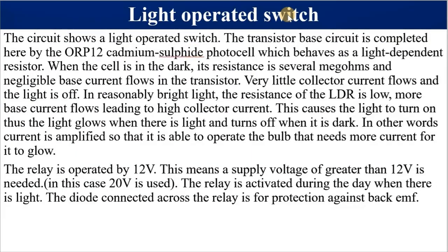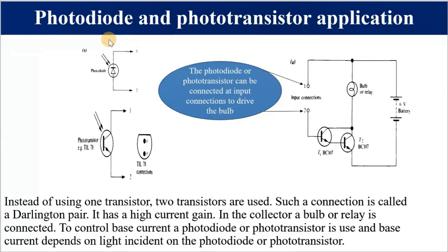Light operated switch — you remember your photodiode and phototransistor. Their resistance decreases when light hits them, or when there is incident light. We want to see how we can use a transistor as a switch to turn on lights. The photodiode or phototransistor can be connected between terminals 1 and 2 — the input connections. Let's see how a transistor can be used as a switch to turn on light.